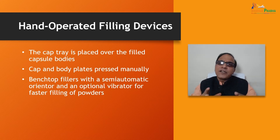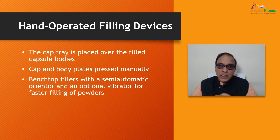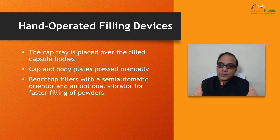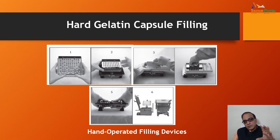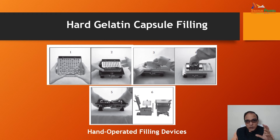The cap tray is then placed over the filled capsule bodies, and cap and body plates are pressed manually. Best-off fillers with a semi-automatic orienter and optional vibrator are used for faster powder filling. These hand-operated filling devices are commonly seen and used in laboratories during undergrad and post-graduation. Please do practice hand-operating machines for filling capsules.